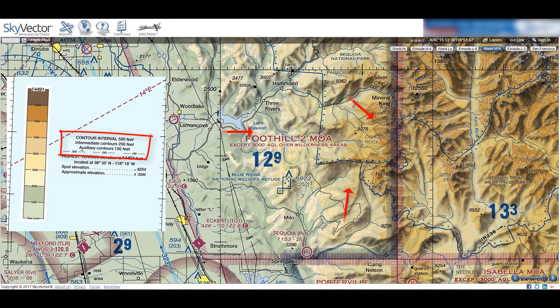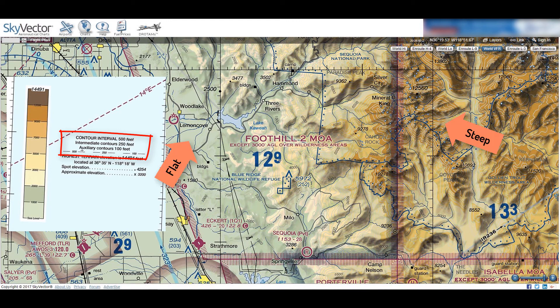Also, there are topographic lines, which are used to mark places where there are drastic changes in elevation. The normal contour interval is 500 feet, and these are marked with their elevation. But in some areas, there will be intermediate contours every 250 feet or auxiliary contours every 100 feet. The closer together the contour lines, the steeper the terrain. Very flat areas will not have any contours, only the color gradient.